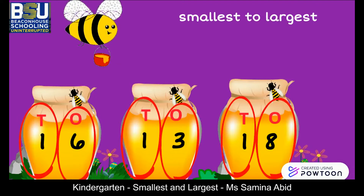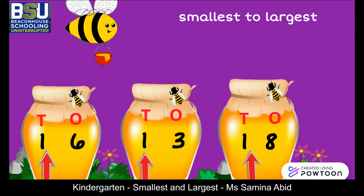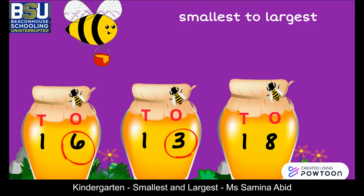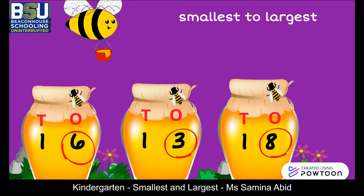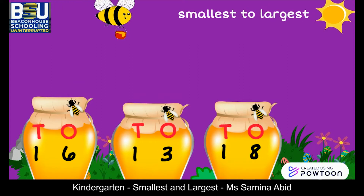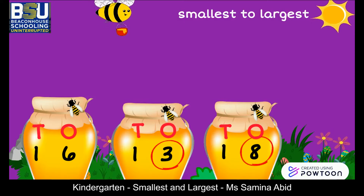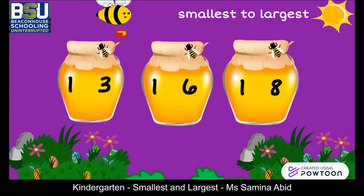These honey pots have different numbers on them in the form of tens and ones. We will arrange the numbers from smallest to largest. Each number has one ten. There are six ones in 16, three ones in 13, and eight ones in 18. The smallest is 13 and the largest is 18, so the order will be 13, 16, and 18.